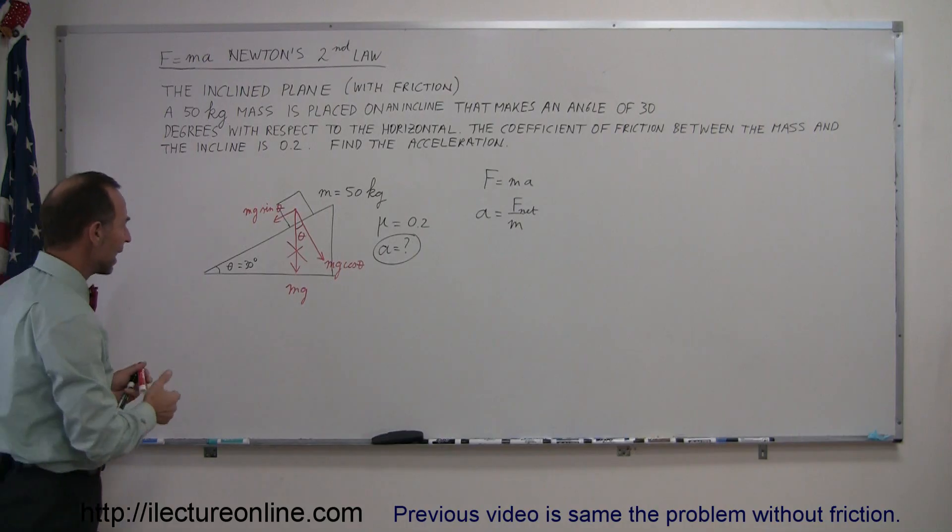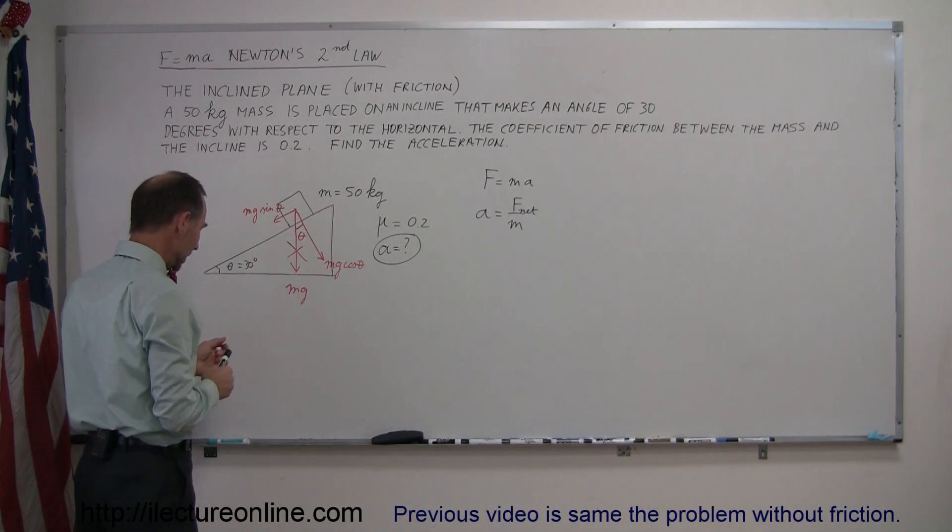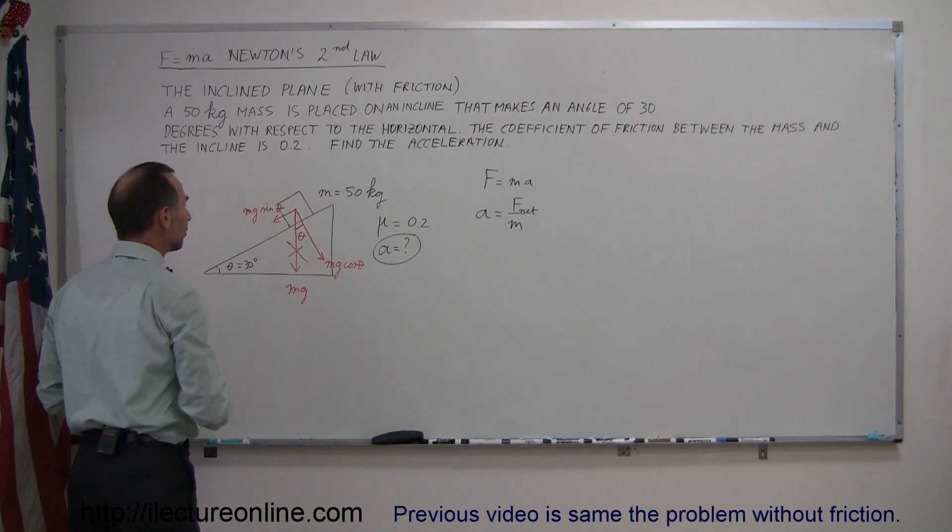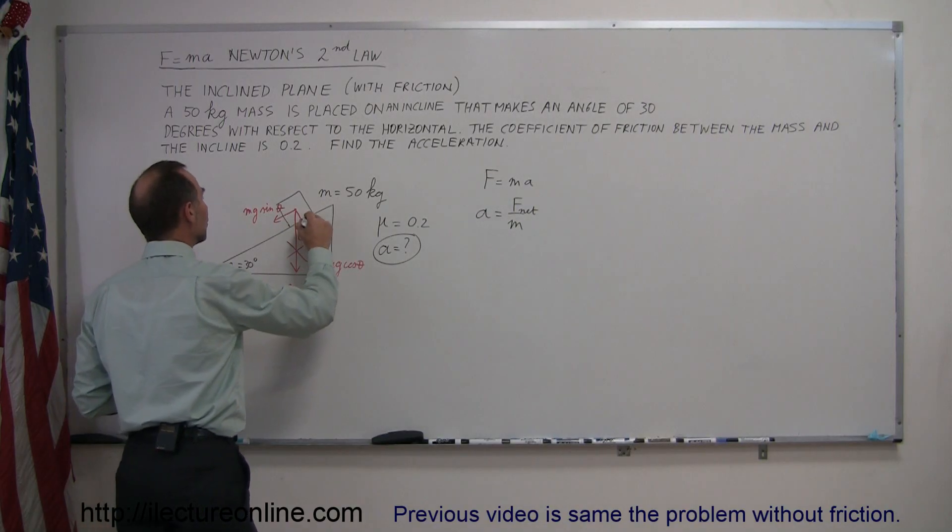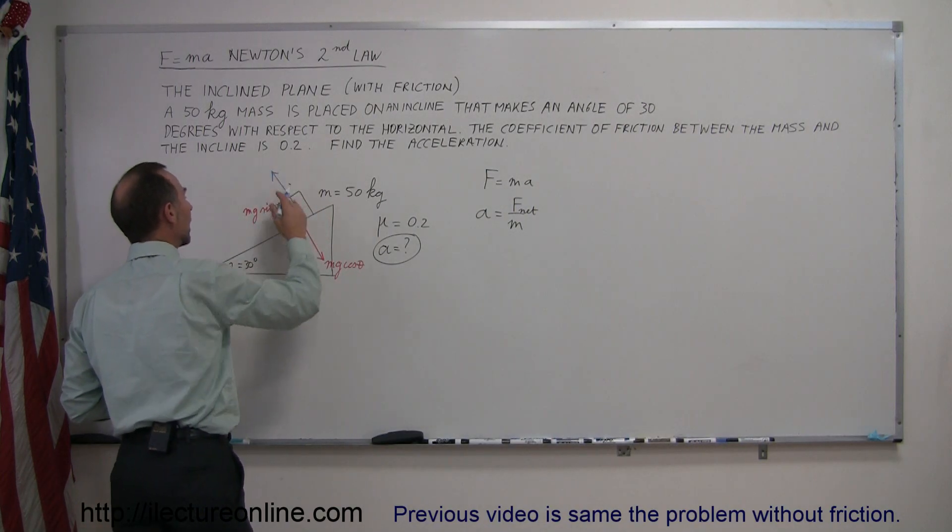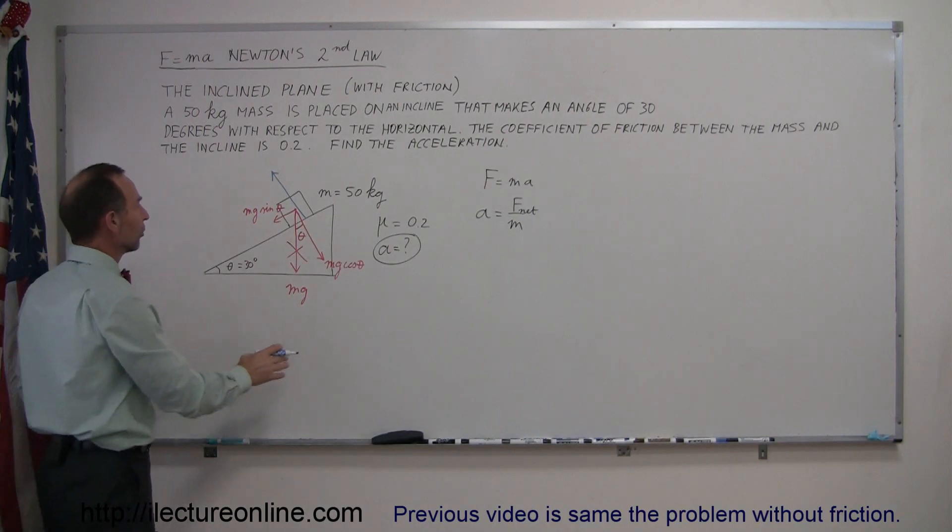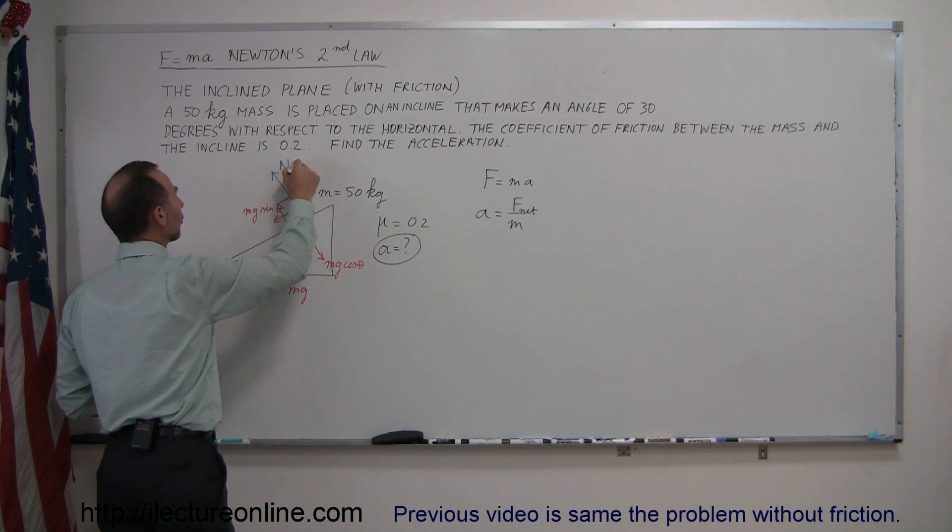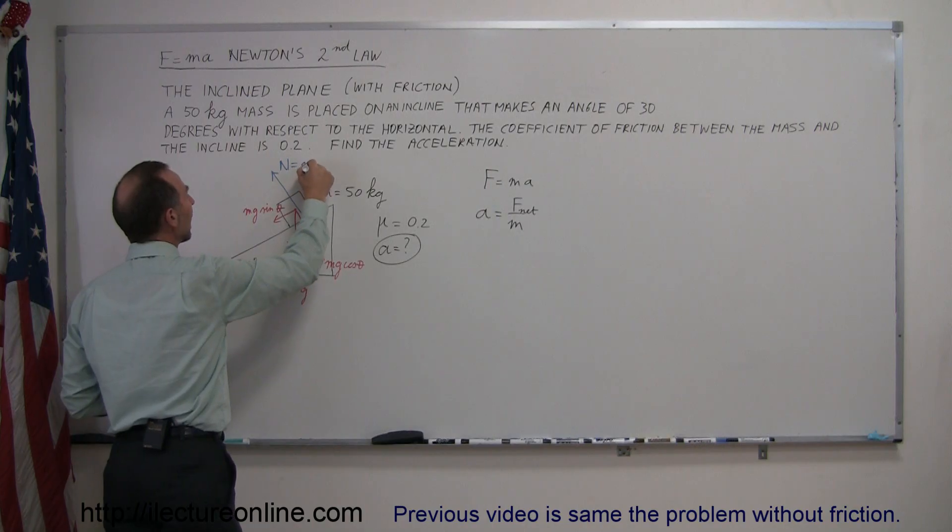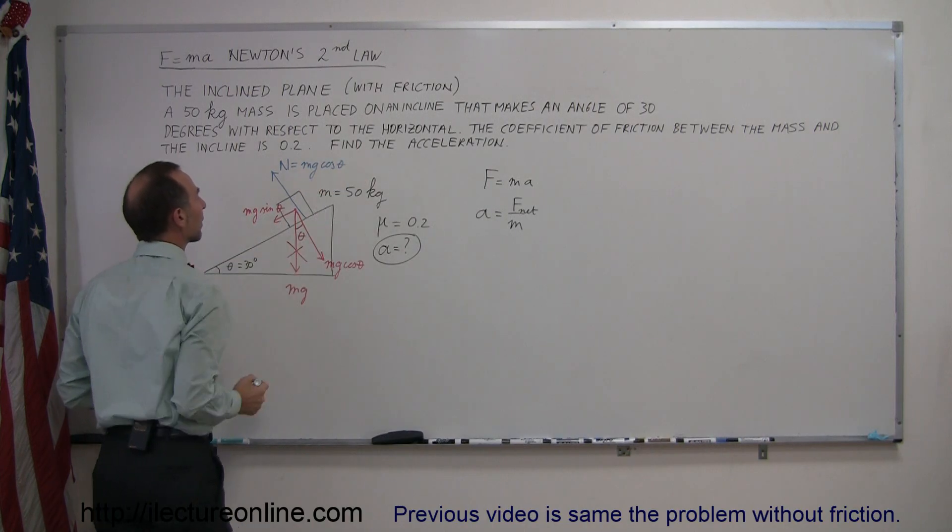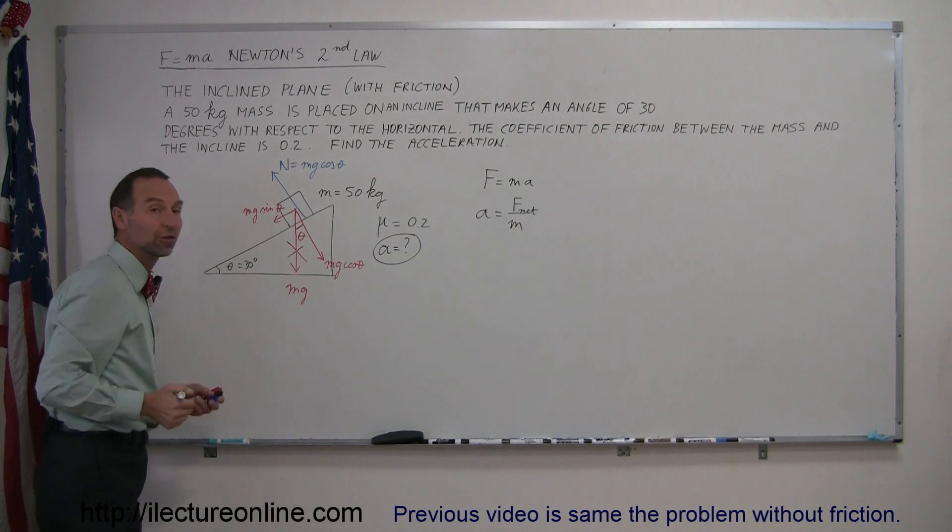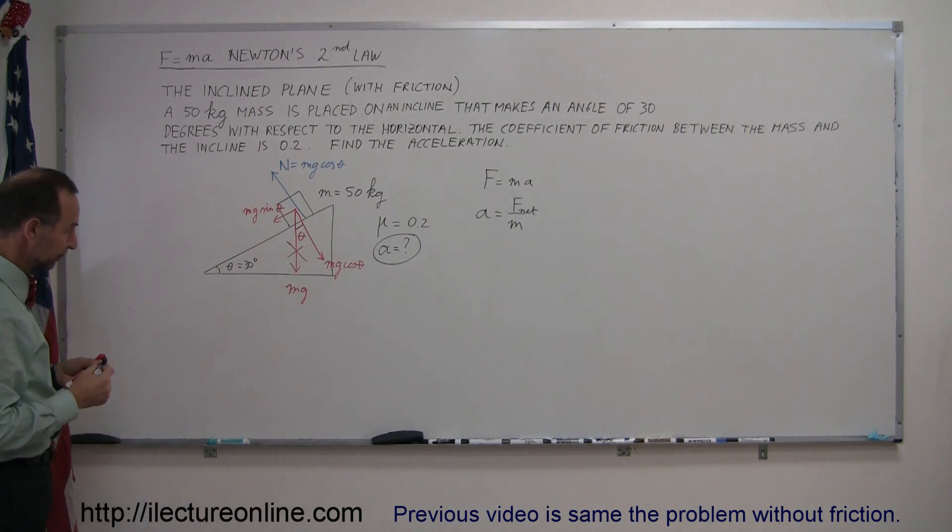Now, since the mass is pushing down on the plane, that means that the plane is pushing back against the mass. Newton's third law tells us that there's an equal and opposite force. Whenever there's an action, there's an equal and opposite reaction. So this is the normal force, and the normal force must be equal in magnitude to the mg cosine theta. And, of course, now you can see that those two forces cancel each other out.